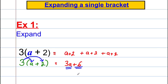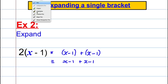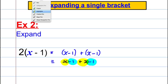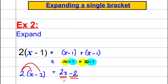Example 2: expand 2(x − 1). The long way: this means (x − 1) + (x − 1), which gives x + x and −1 + −1, so 2x − 2. The short way: 2 multiplied by x is 2x, and 2 multiplied by negative 1 is negative 2, giving 2x − 2.